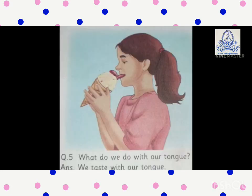Fifth, tongue. What do we do with our tongue? We taste with our tongue. It helps us to taste different kinds of food. It can taste food that is spicy, sour, sweet, or bitter. Matlab ki tikhha, mitha, khatta — woh hume tongue se pata chalata hai. It is all because of the sense of taste of the tongue.